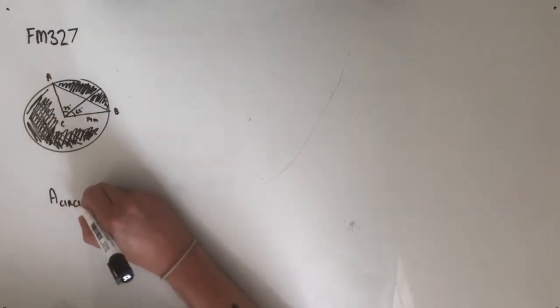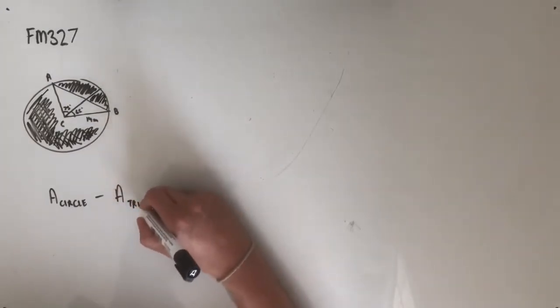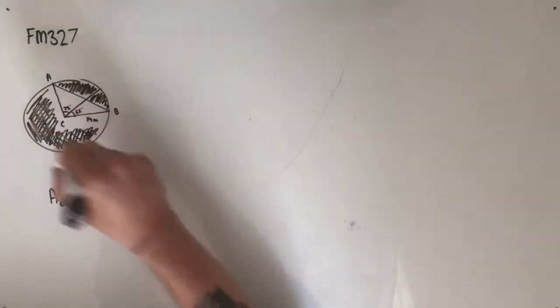Let's find the area of our circle. And then from that, we're going to subtract the area of that triangle, which should leave us with just the shaded bits.